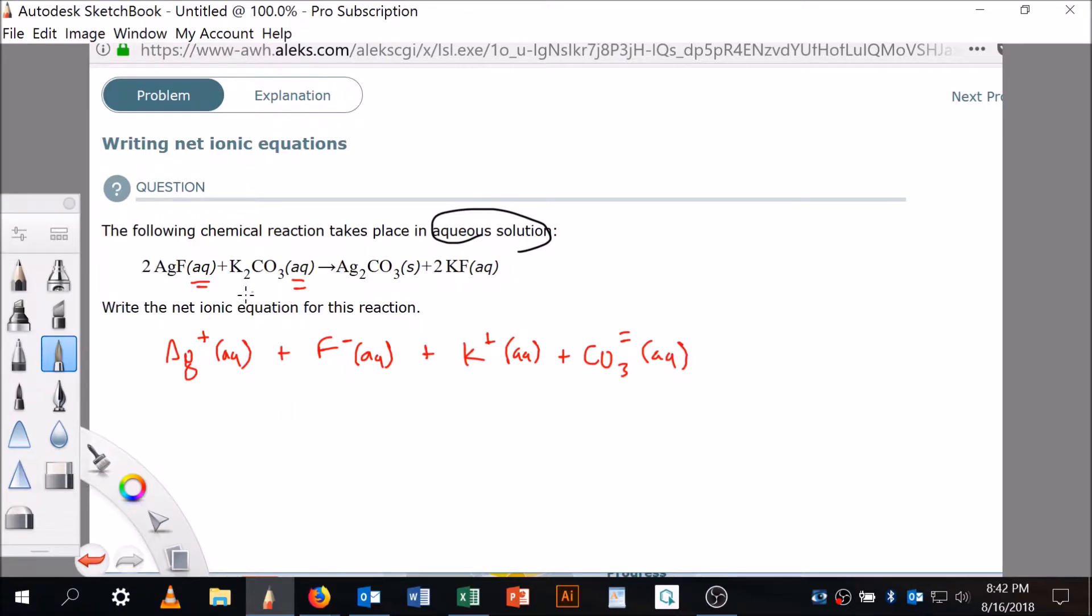Not everything's here, of course. There's a two in front of this. Let me come down here and go back to black. There's a two there, and there's a two here because there's two fluorides. There are two potassiums because of that. And so that's it for that.